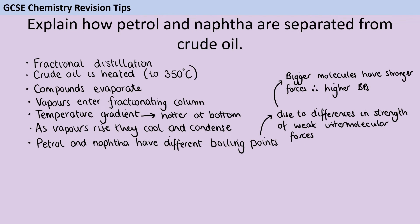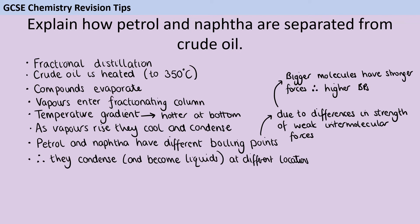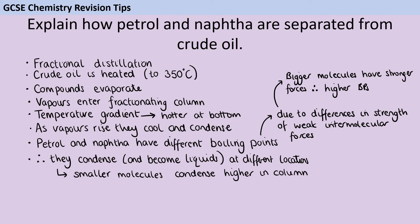Because petrol and naphtha are different sizes and have different boiling points, they're going to condense in geographically different locations — one higher and one lower. It's the smaller molecules that condense at the top of the column, because that's where the temperature is lower.